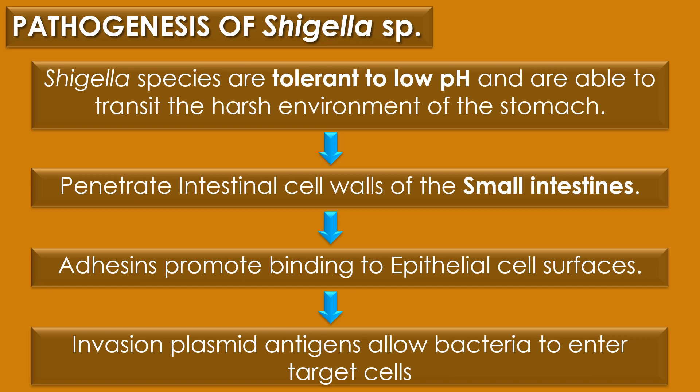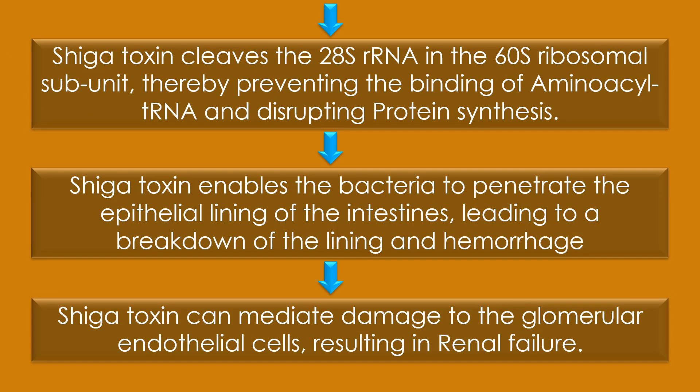Pathogenesis of Shigella species. Shigella species are tolerant to low pH and are able to transit the harsh environment of the stomach. An infective dose can be as few as 100 bacteria, which attach to and penetrate intestinal cell walls of the small intestines. Adhesins promote binding to the epithelial cell surface, and invasion plasmid antigens allow the bacteria to enter target cells, increasing virulence. After increasing virulence, Shiga toxin cleaves the 28S ribosomal RNA in the 60S ribosomal subunit, thereby preventing binding of aminoacyl-tRNA and disturbing protein synthesis. Shiga toxin also enables bacteria to penetrate the epithelial lining of the intestines, leading to breakdown of that lining and hemorrhage — that is, bleeding or abnormal flow of blood.